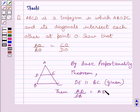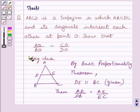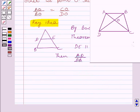This is the key idea to solve the given question. Now let us start the solution. First of all, let us write what all is given to us in the question. This is a trapezium in which AB is parallel to CD.